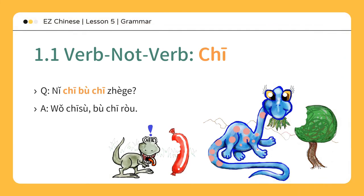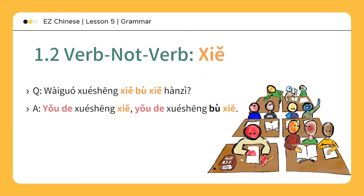你吃不吃这个？ Do you eat this? 我吃素，不吃肉。 I'm a vegetarian; I don't eat meat. 外国学生写不写汉字？ Do students from abroad write Chinese characters? 有的学生写，有的学生不写。 Some students do, some students don't.